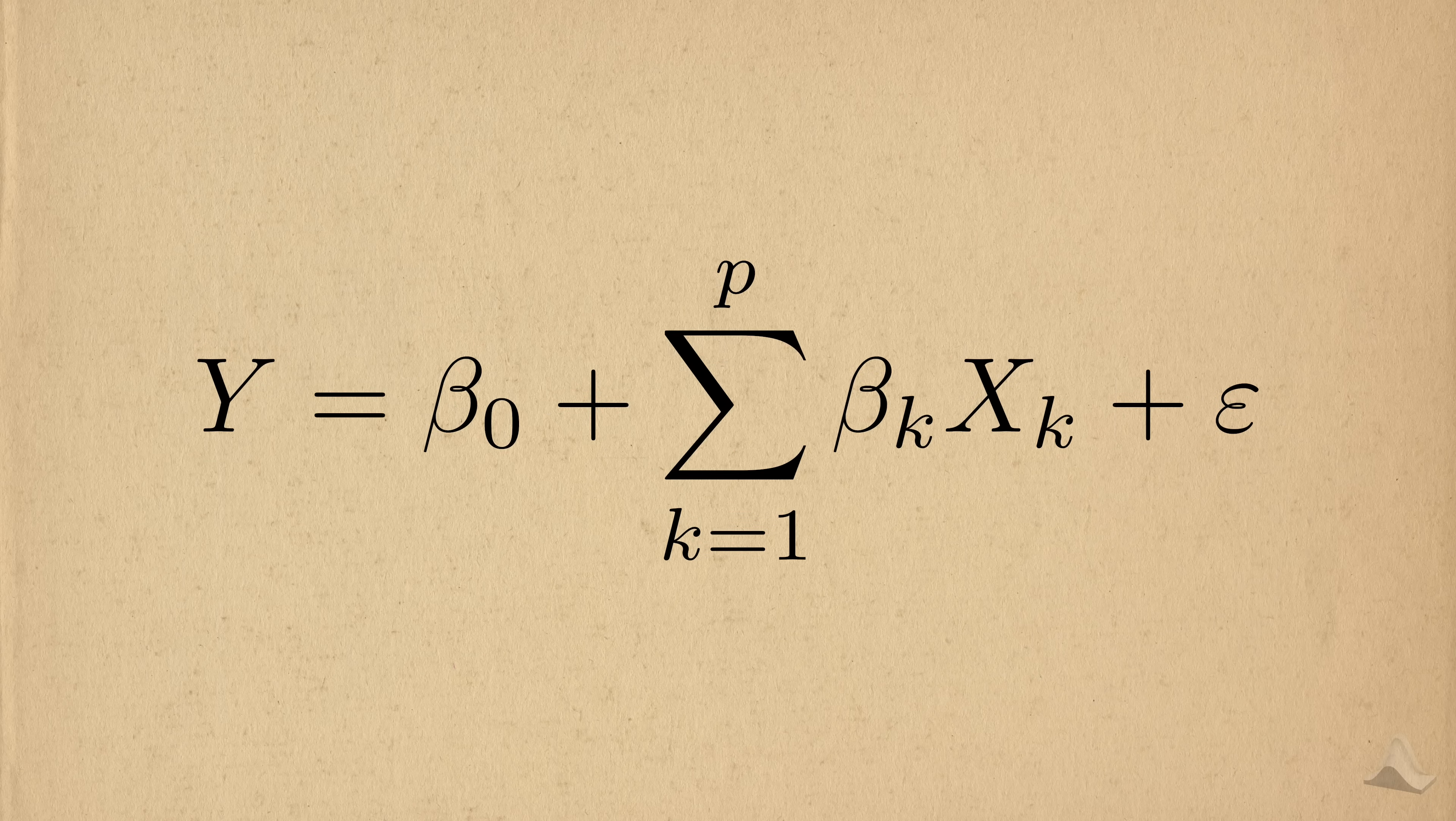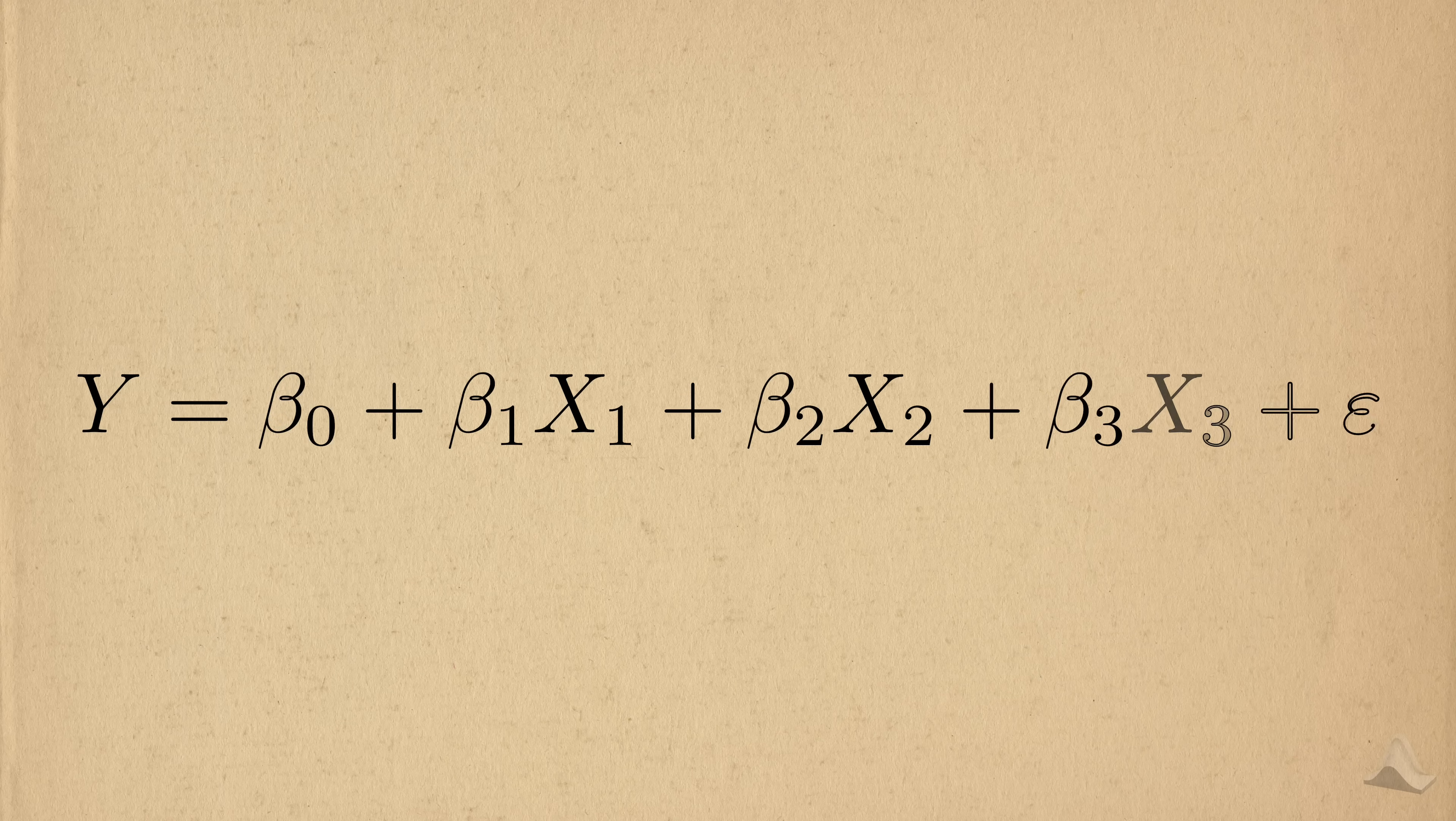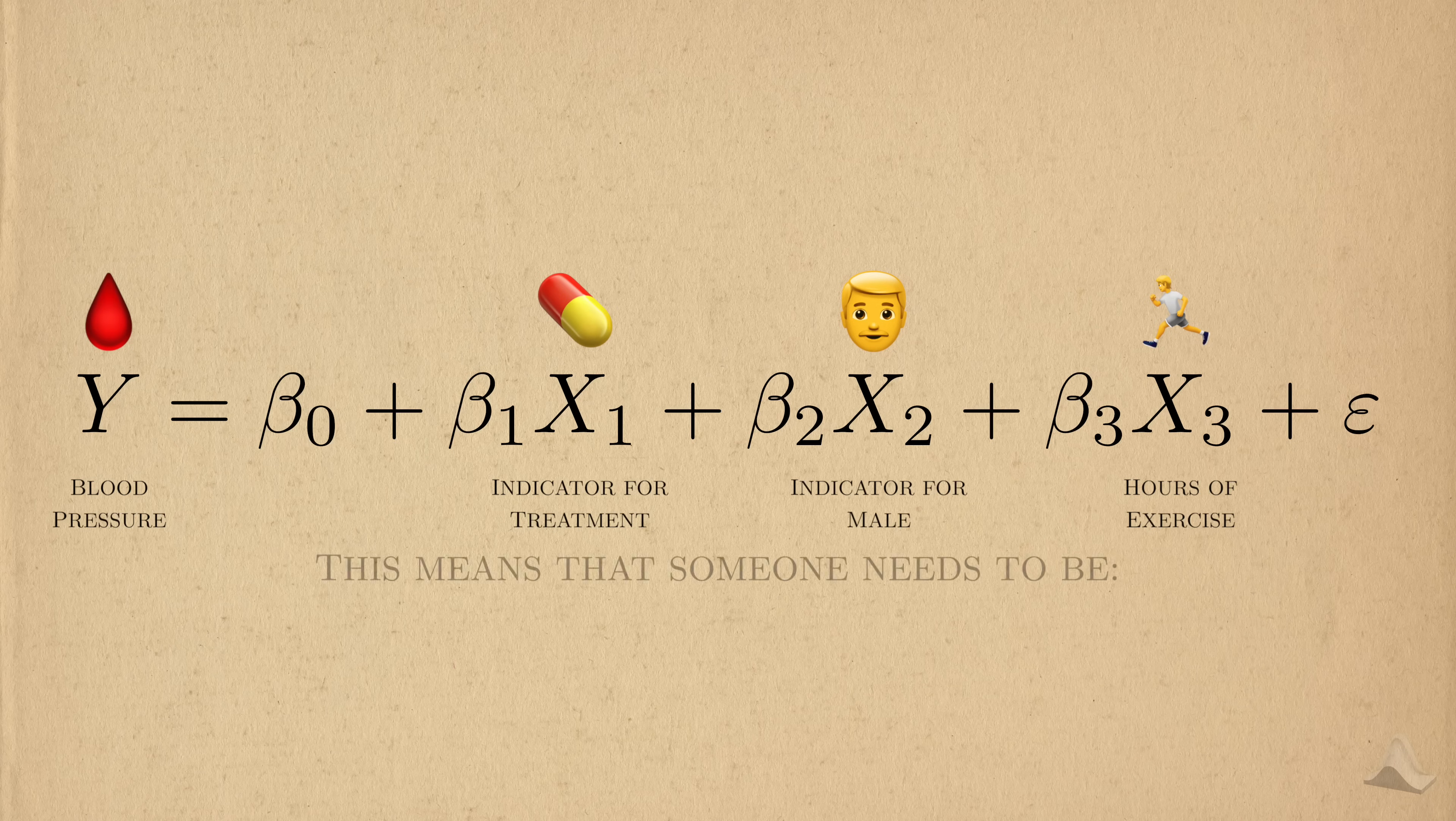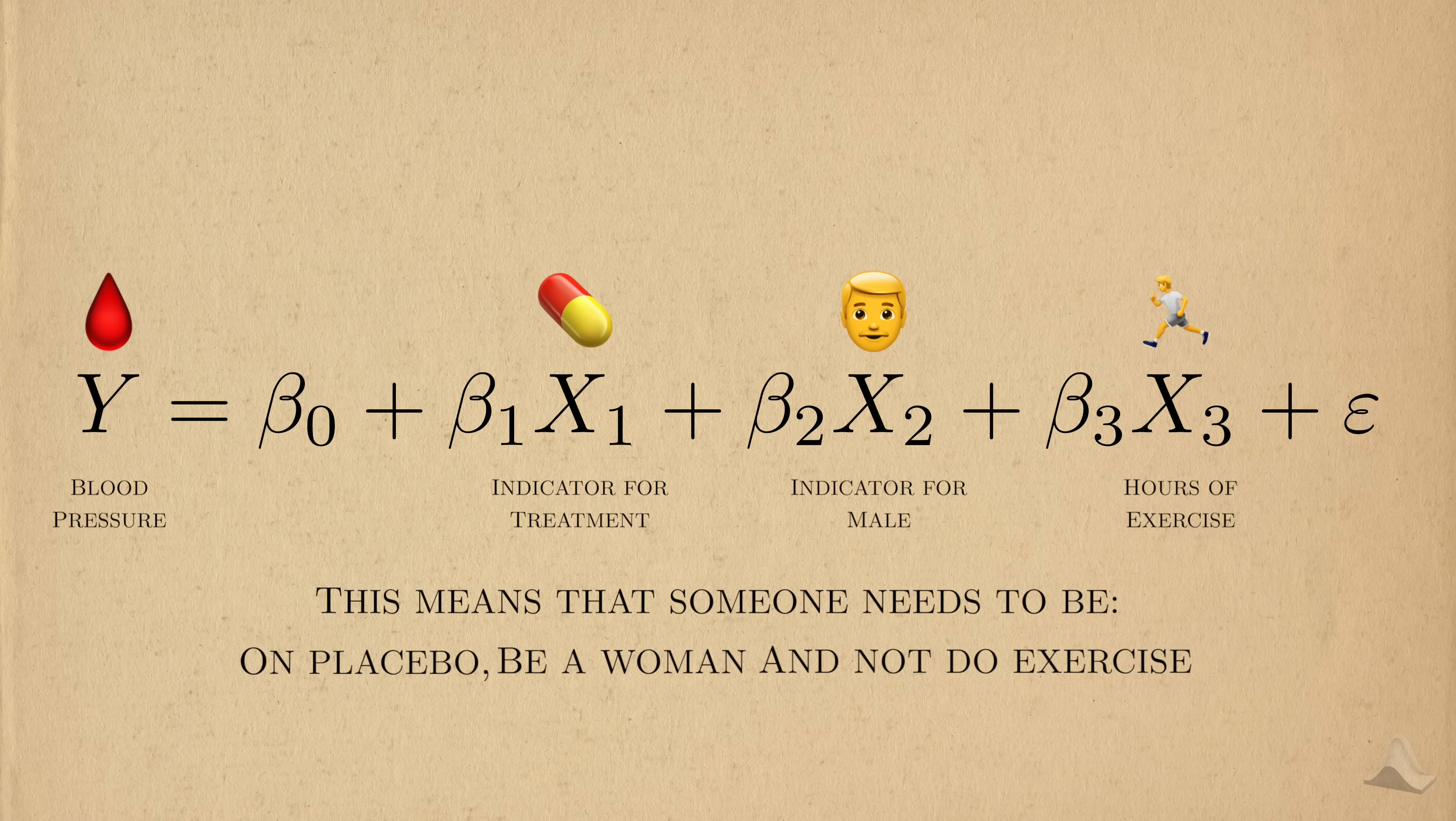When we shift from a single covariate to multiple covariates, the interpretations of the coefficients mostly remain the same, but with some small modifications. To see this, let's look at a model with three covariates. A categorical variable for treatment, another indicating if someone is male or not, and then hours of exercise. Same outcome as before. To isolate beta 0, all of the covariates in the model need to be 0, not just one of them. For this to happen, someone needs to be on placebo, be a woman, and then have no exercise. So beta 0 represents the average outcome of someone who fits this description.